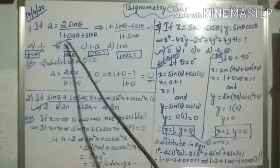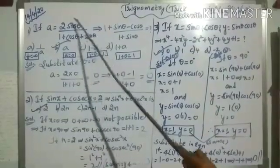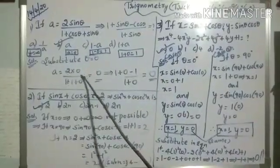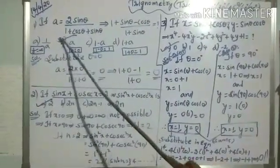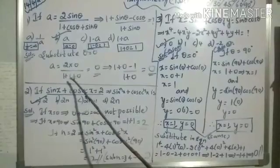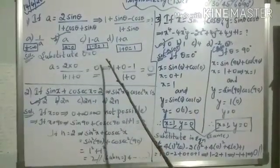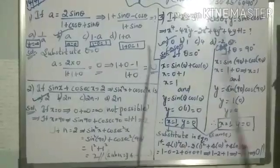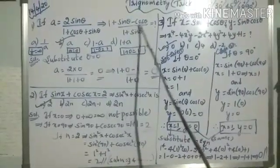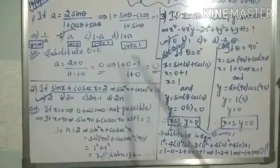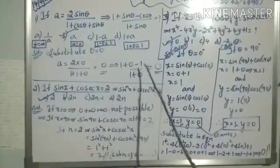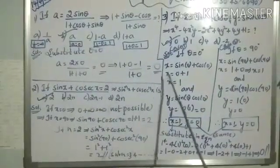A equals 2 sin θ divided by (1 + cos θ + sin θ). In the place of θ, substitute 0. Sin 0 is 0, so A equals 2 × 0 divided by (1 + 1 + 0), which gives 0. So we got our A value as 0. Now they are asking to find (1 + sin θ − cos θ) / (1 + sin θ). Instead of solving this whole expression, we check the options where the condition A = 0 is satisfied.